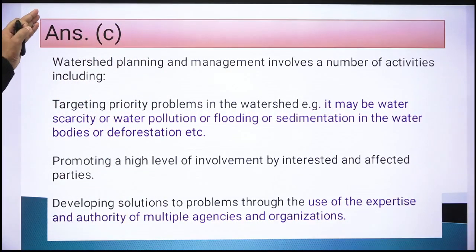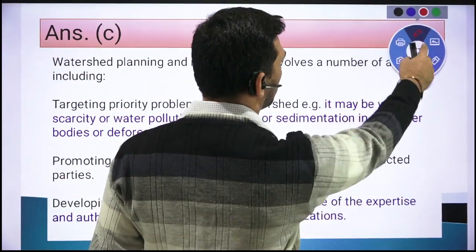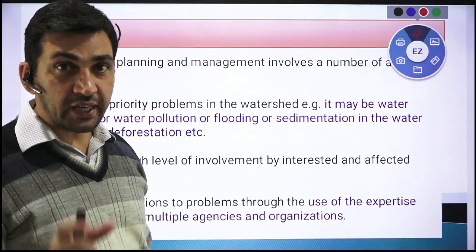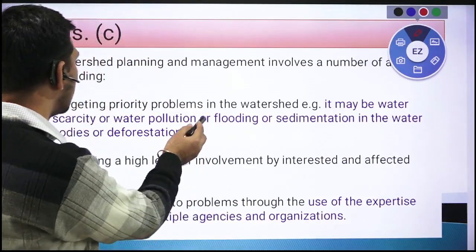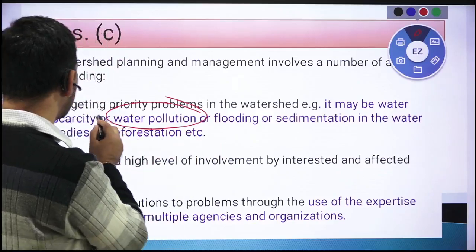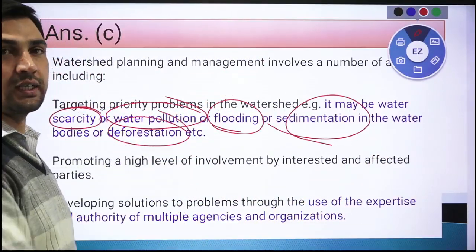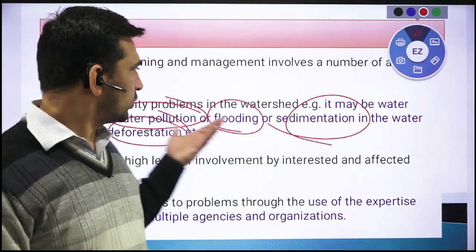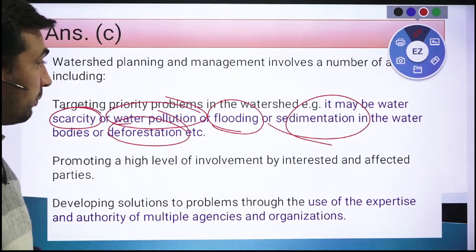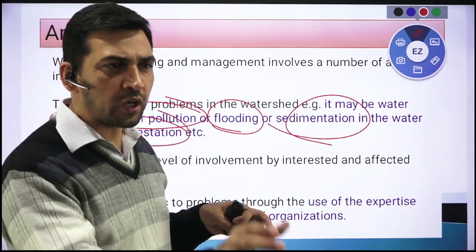The first step in watershed planning is targeting priority problems. You need to identify what problems exist in that particular watershed area — these could be related to water pollution, water scarcity, flooding, sedimentation, or deforestation. You need to see the watershed holistically rather than studying problems in isolation.